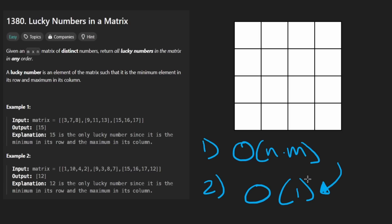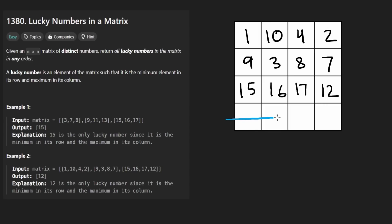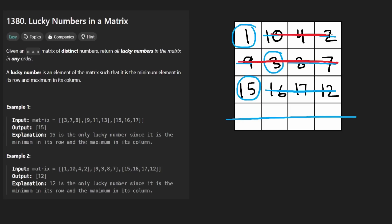I'll walk you through my exact thought process for that, but let's get into the question first. We're given a matrix that could look something like this. The idea is we want to identify lucky numbers. A lucky number by definition has to be the minimum number in the row. So if this is the minimum in the row, there's no way any of these numbers could be lucky. This is the minimum in the second row, and this is the minimum in the third row — there's no way any of those could be lucky.